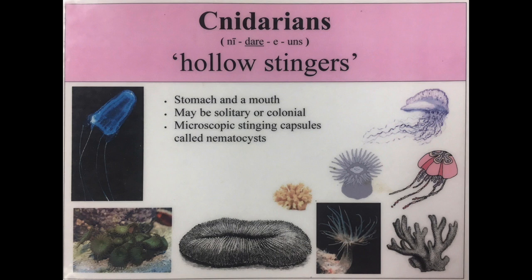All cnidarians have a stomach and a mouth. They can be solitary or colonial. And importantly, all cnidarians have stinging cells called nematocysts. Cnidarian literally means stinging creature. Most people in Hawaii know about the stinging cells in the box jellyfish or the Portuguese man-o-war — major ouch. But all the members of this phylum, including corals and anemones, also have stinging cells, but they don't have enough power to penetrate human skin, which is very lucky for us.